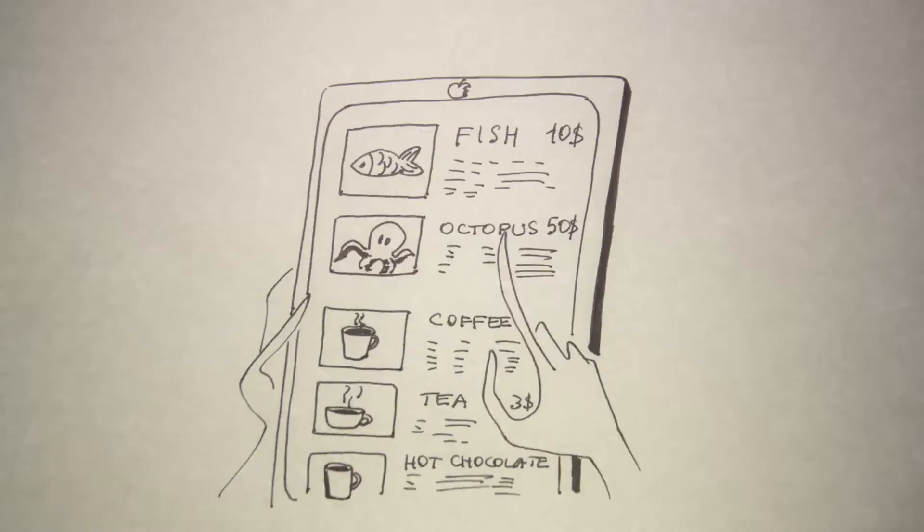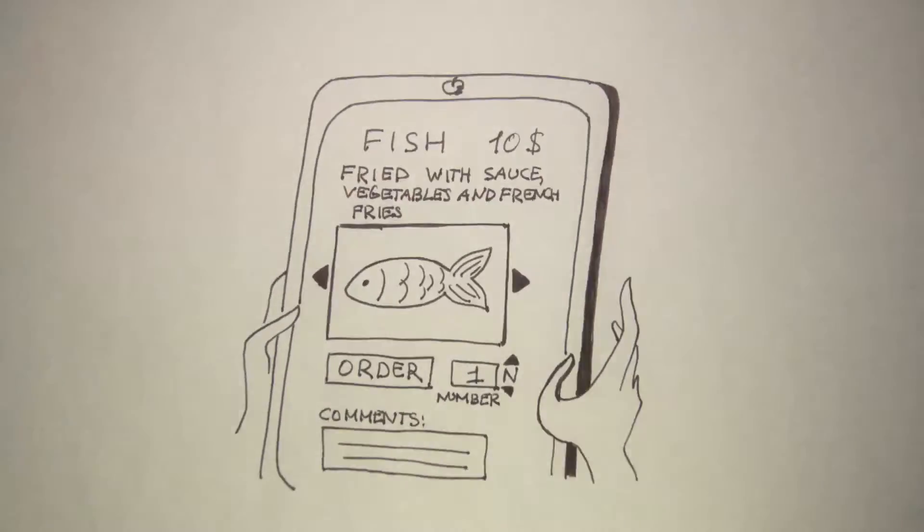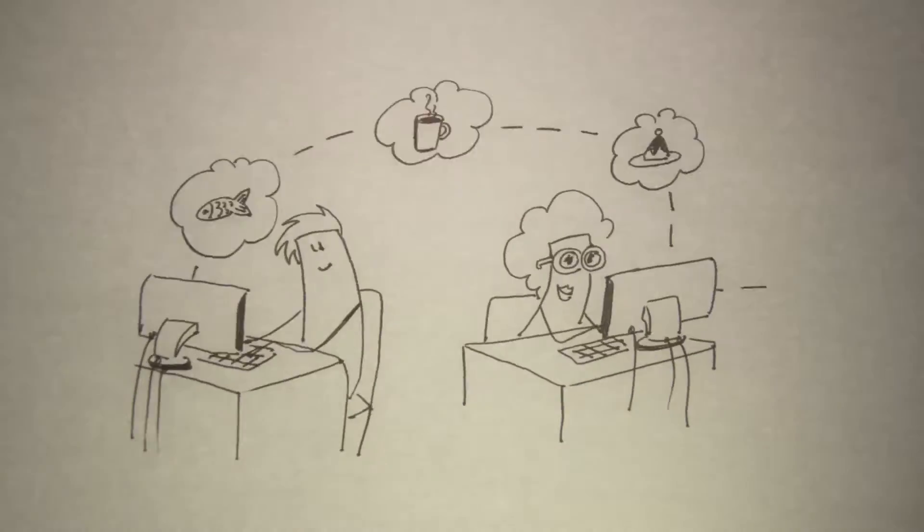The client makes an order from a table tablet or their own iPad. The order goes directly to the cook's computer, the accountant's books, and the manager's log.